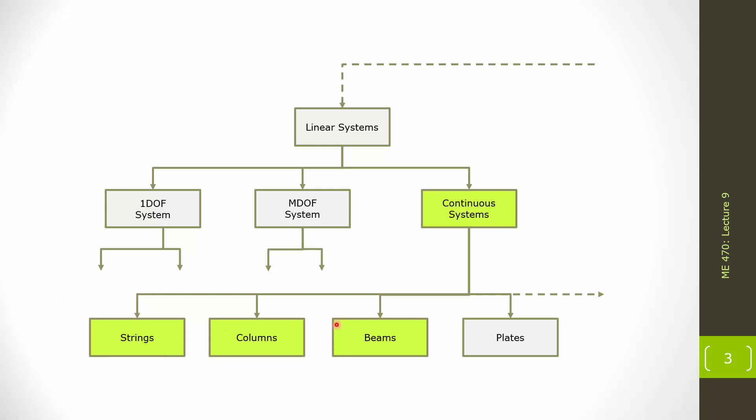We are then going to look at beams in two sections, where we're going to have transverse vibrations. And in the continuous systems, we're going to be able to link it back to multi-degree of freedom systems, the previous unit, through the use of finite element analysis. And other types of continuous systems you could see would include plates and so on, but that will be reserved for a more advanced version of this class.